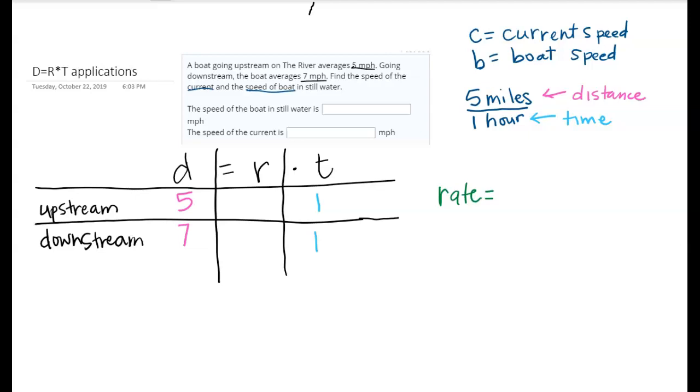Thinking about it from a practical standpoint, if you were going upstream and your current was faster than your boat, you really wouldn't be going upstream, you would be falling back and slowing down to the point where you would be going backwards. So we always need our boat speed to come first. Our rate is made up of our boat speed plus or minus our current speed.